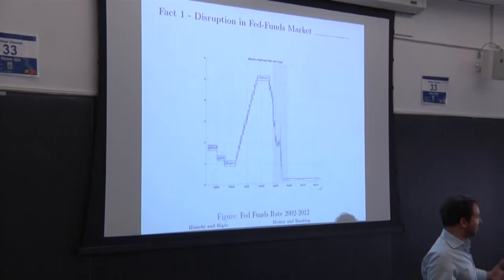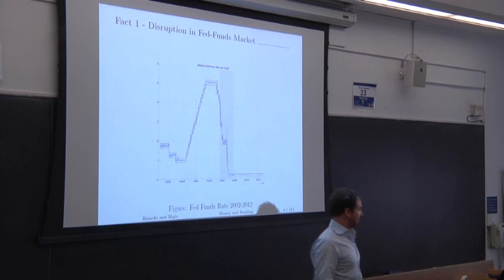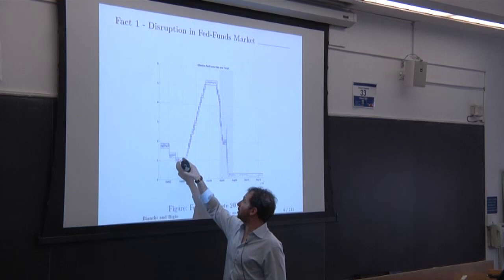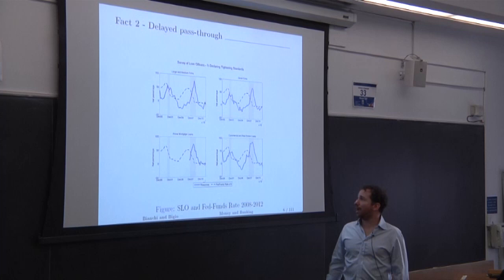These red bars are the policy instruments that the Federal Reserve uses to implement its monetary policy targets. The blue line is the outcome of that policy strategy. What you see in this graph is that prior to the crisis, the Fed has a very tight control over interest rates. During the crisis, it loses its control.